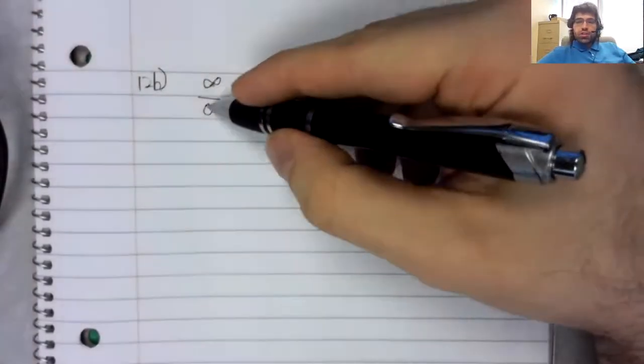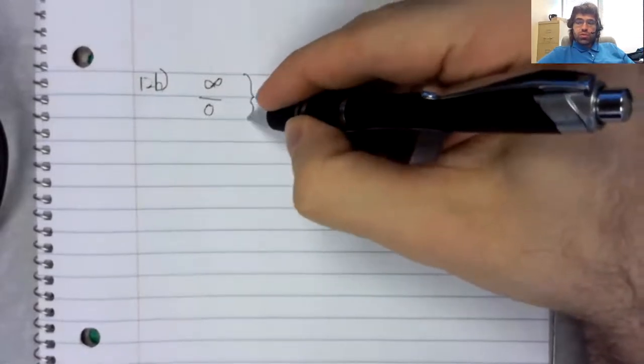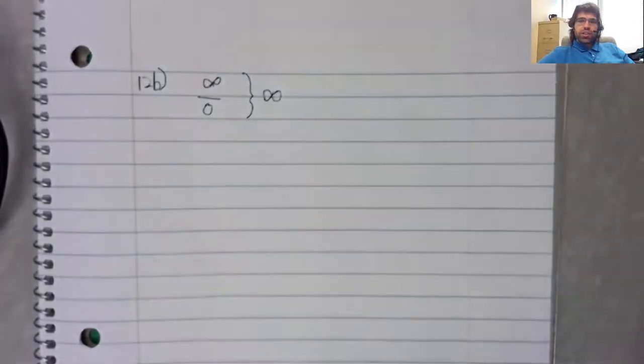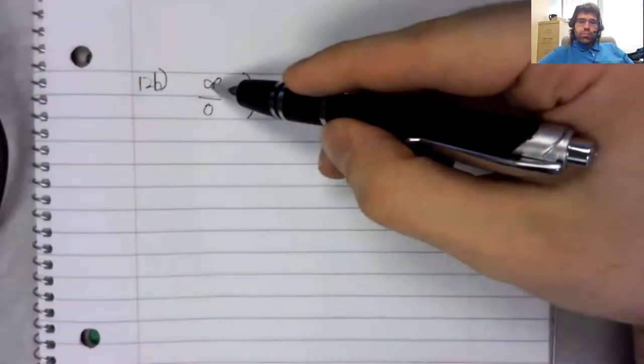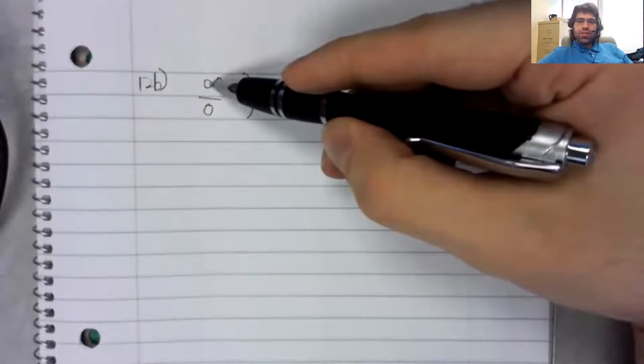This is not indeterminate. This just tells you that the entire fraction is going to infinity. The numerator getting big makes a fraction go to infinity.